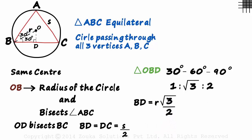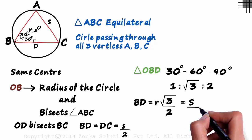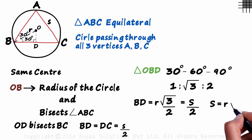And we also know that BD is equal to S by 2. There you go. We have the relation. Multiplying both sides by 2, we get S as R root 3.